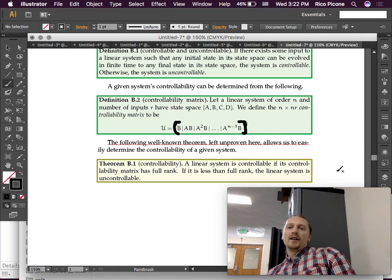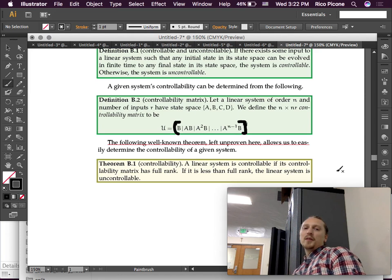The following well-known theorem, left unproven here, allows us to easily determine the controllability of a given system. So, it's pretty cool. It's very powerful. Proving this is not easy, but it can be done. A linear system is controllable if its controllability matrix has full rank. If it is less than full rank, the linear system is uncontrollable. Now, you guys have used that terminology in linear algebra, right? Full rank of a matrix.